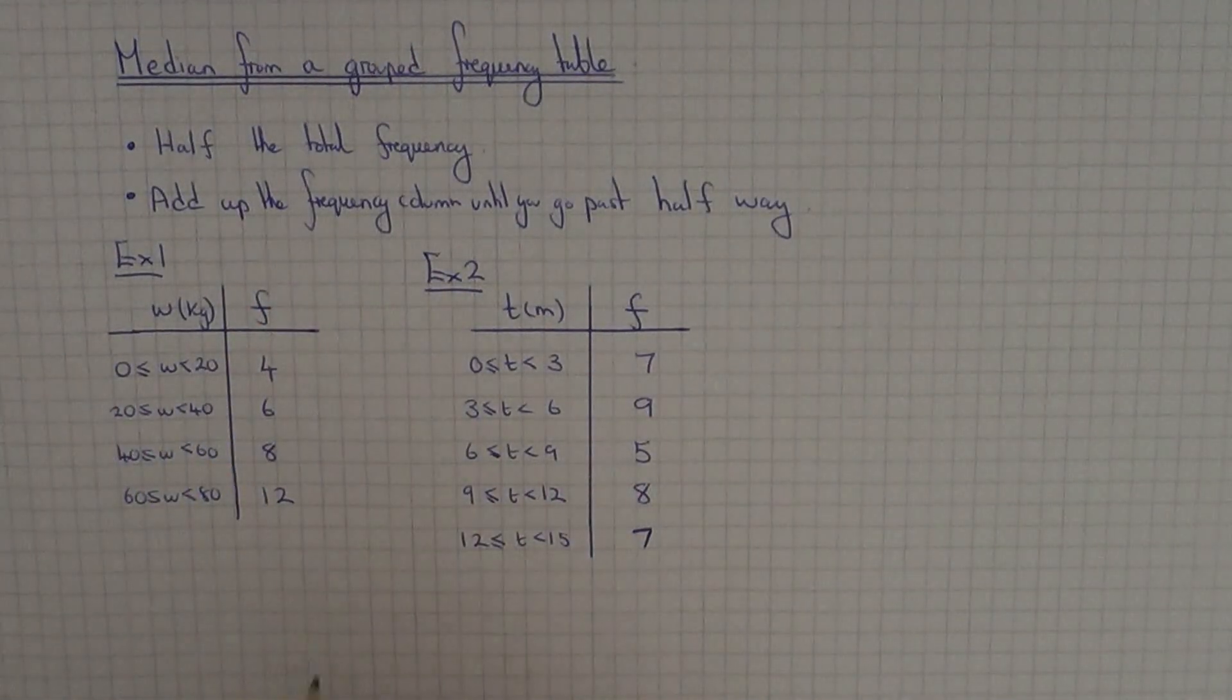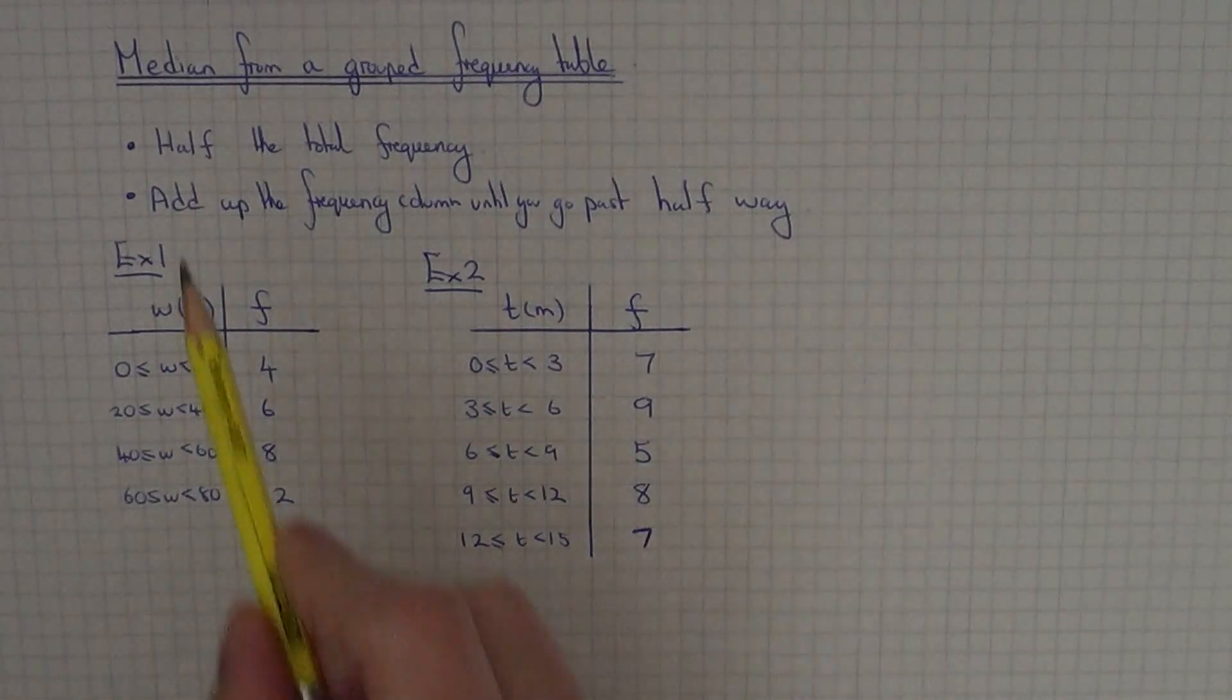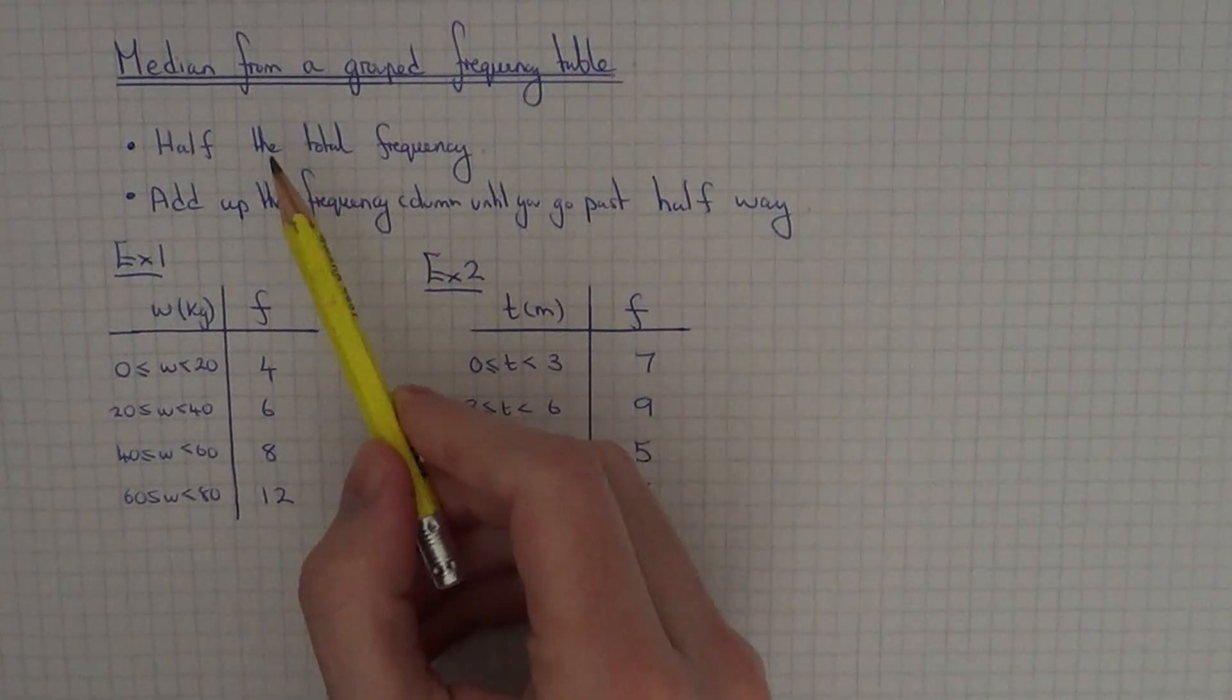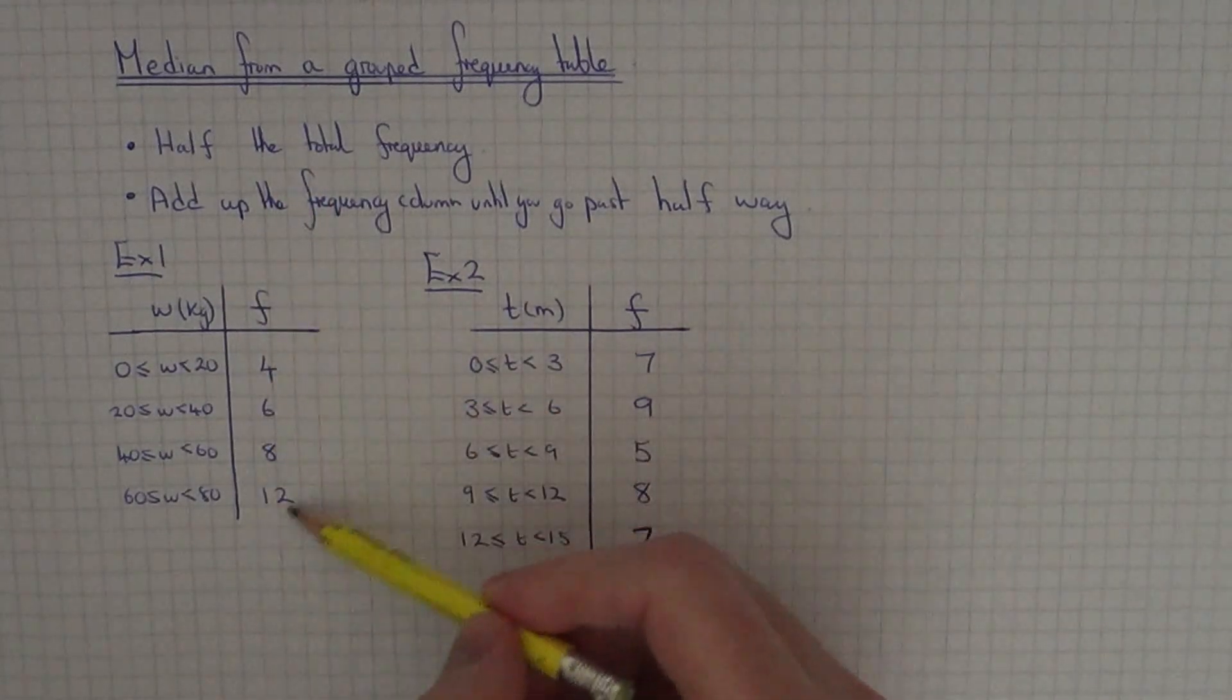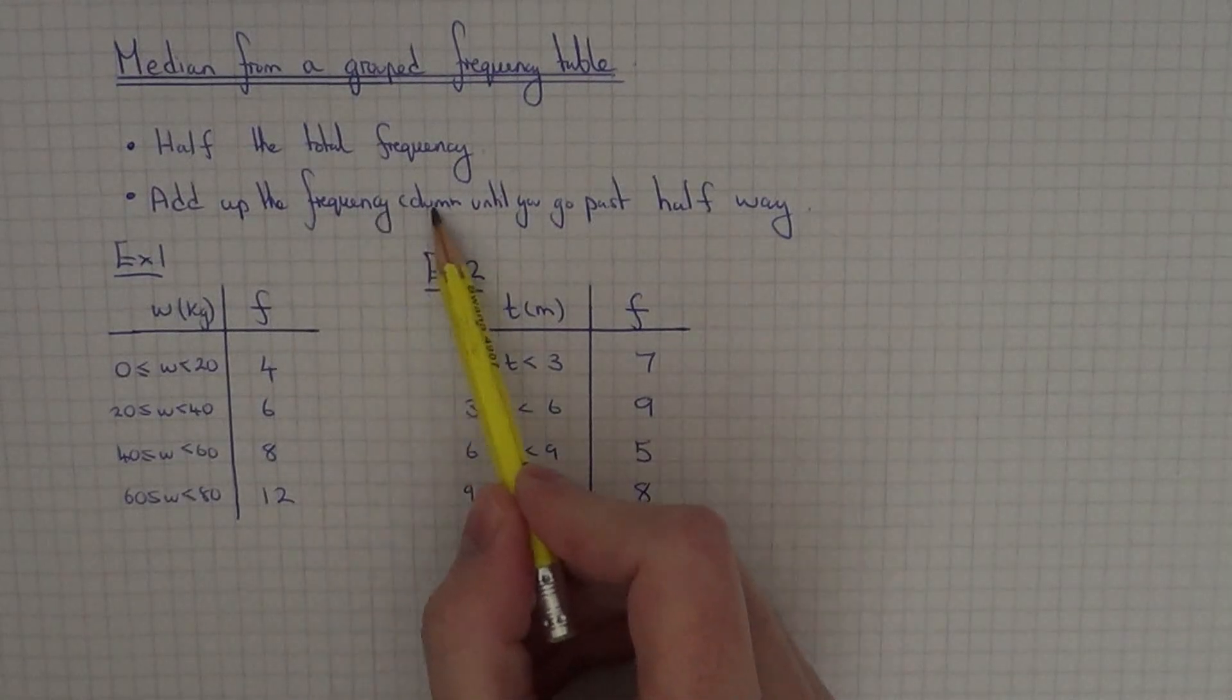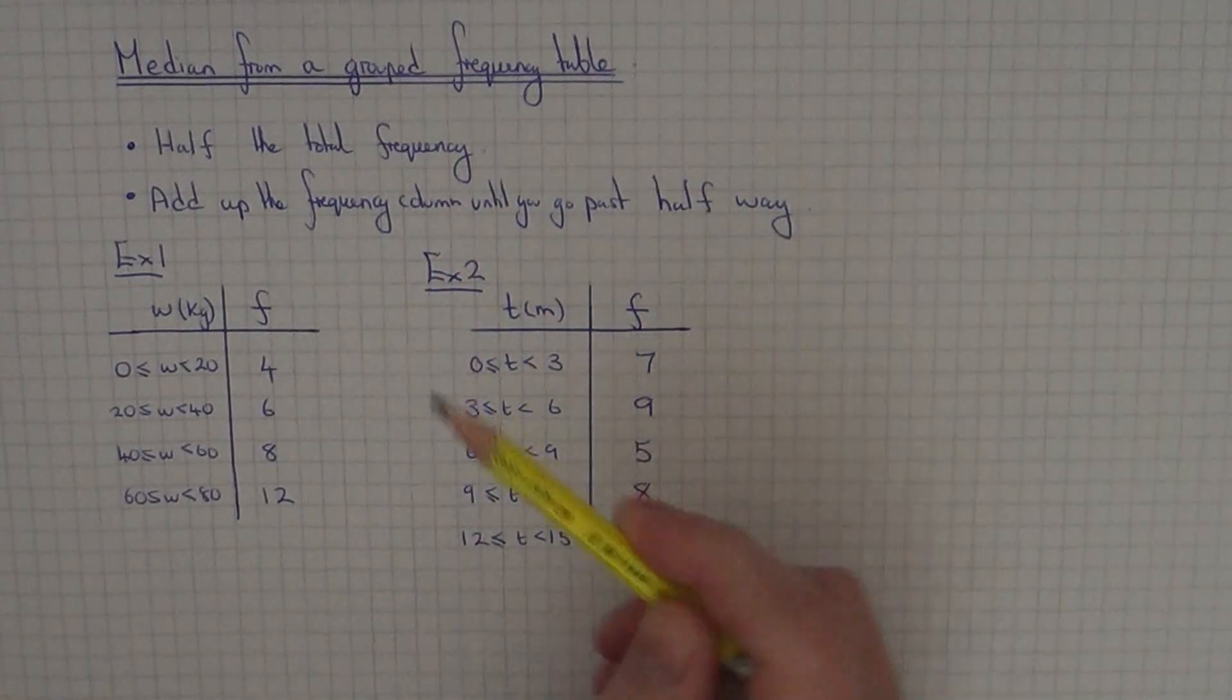Today I'm going to show you how to work out the median class interval from a grouped frequency table. I've put a couple of steps to follow here. First of all you need to half the total frequency, and then you need to add up the frequency column until you go past this halfway number.